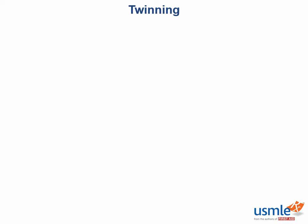Our next topic in embryology is twinning. Do you remember which of the 6 types of errors in organ morphogenesis twins are at risk for? That would be deformation, since it can be crowded in the uterus and twins can put physical pressure on each other.